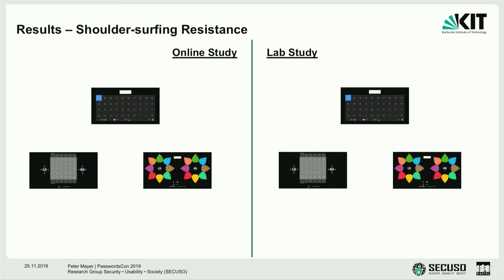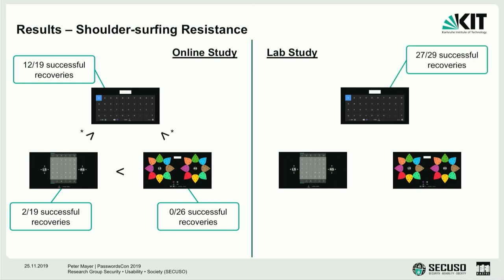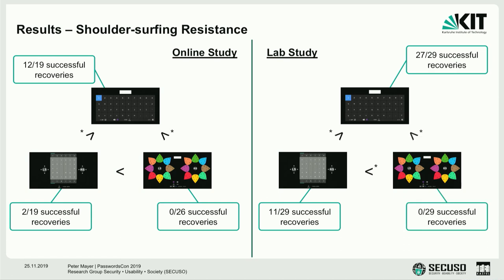For the online study results: 12 of 19 people could successfully observe the password for the on-screen keyboard. For the grid-based scheme it was only 2 of 19, and nobody for the color wheel scheme. Differences were significant for the on-screen keyboard versus the other two schemes, but not between the grid-based and color wheel schemes. In the lab study, most people found the password for the on-screen keyboard, almost half for the grid-based scheme, but again nobody for the color wheel scheme — and here all differences are significant.